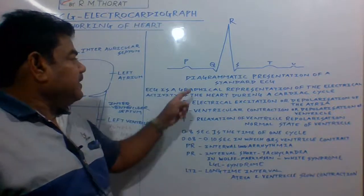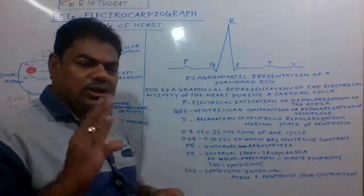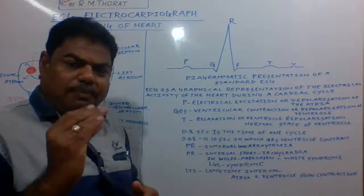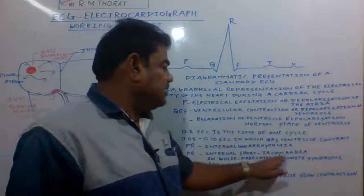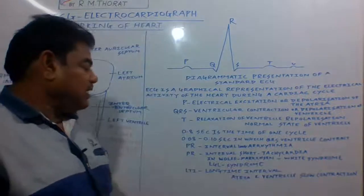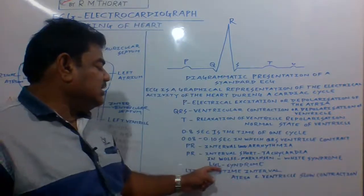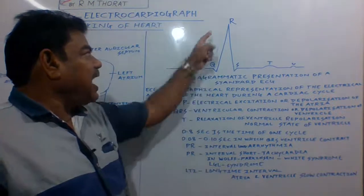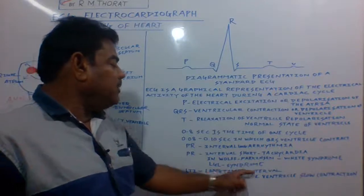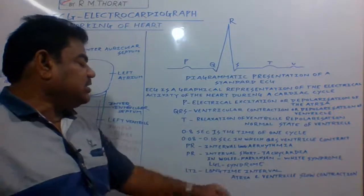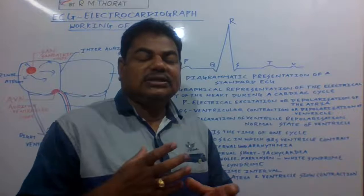If the PR interval is short, we call it tachycardia — a disorder seen in Wolff-Parkinson-White syndrome and LGL syndrome. If the PR interval is long — what we call a Long Time Interval (LTI) — the contraction of the atria and ventricles slows down. If the P wave is not coming normally, it means there is a problem in the auricles. If the QRS interval is varying, there is a problem in the ventricles — either the right or left ventricle.